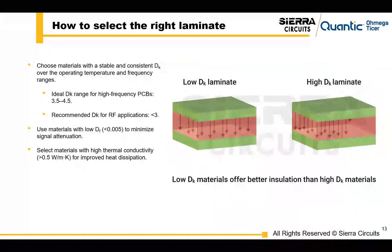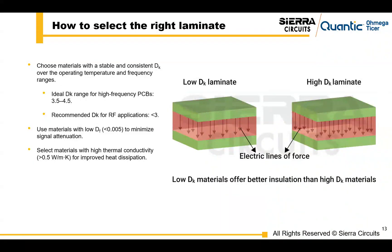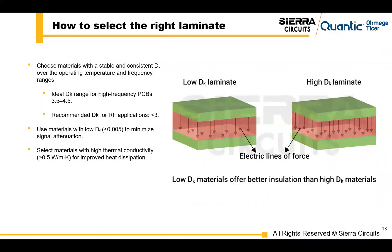Some design guide pointers: when selecting materials for high frequency and RF applications, choose materials with stable dielectric constants. For high frequency circuit boards, use materials with a dielectric constant between 3.5 and 4.5, and choose materials with low dissipation factors, preferably below 0.005, to help with signal loss.